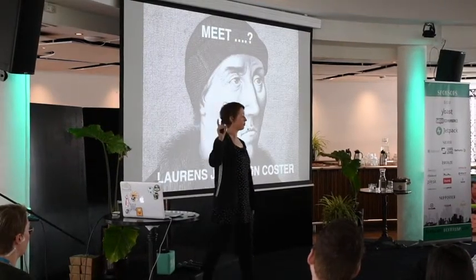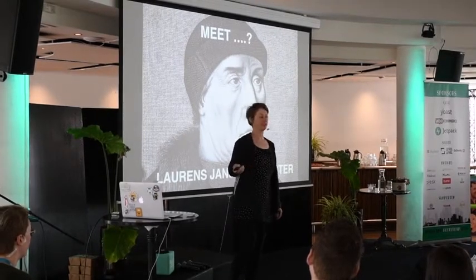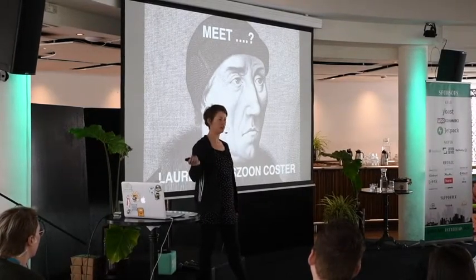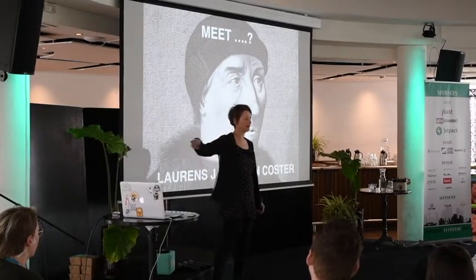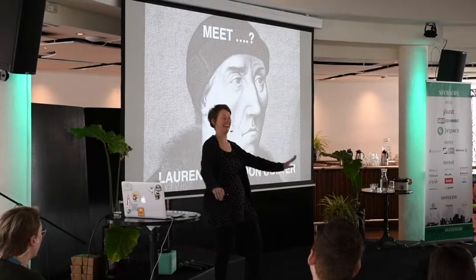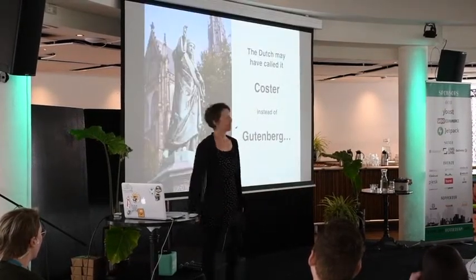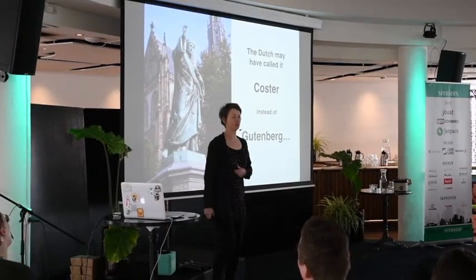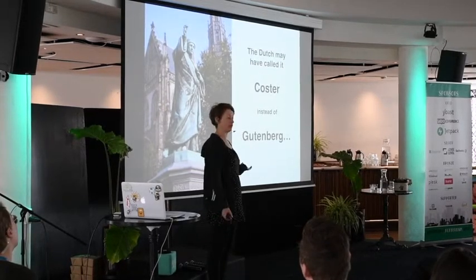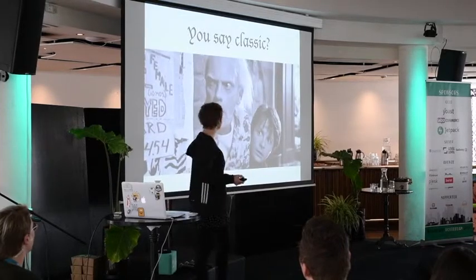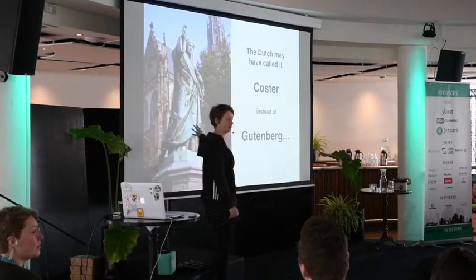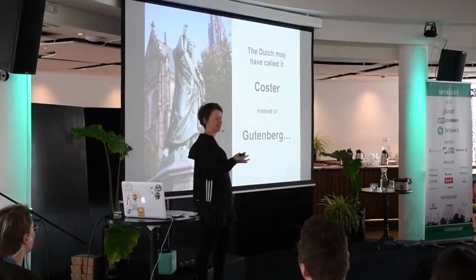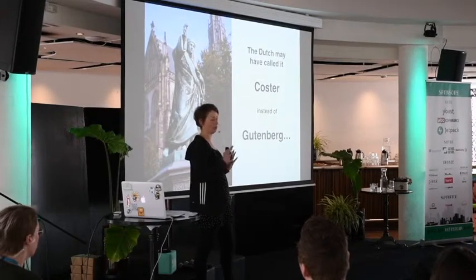I did graphical school here in Rotterdam at some point. When I was there, we learned that Laurence Jansson Koster was the Dutch guy who invented book printing. And that German guy, Gutenberg? Nah — the Dutch invented it. He's even got a statue in Haarlem on the main square. So we called it Gutenberg for a reason; we may have called it Koster for a reason, which would have been a good name. But this guy turned out to be a fraud — he wasn't the one who invented it, and now all the credits go to Gutenberg.